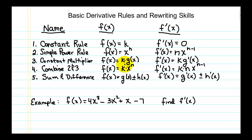Our third rule is called the constant multiplier. If we have some differentiable function multiplied by a constant, when we take the derivative it's just that original constant times the derivative of the function. We don't usually use this rule by itself, but if we combine the power rule and the constant multiplier rule, we get a function with a coefficient times x to a power. Using those two rules, we take our coefficient, multiply it by the original exponent, and subtract one from the exponent.